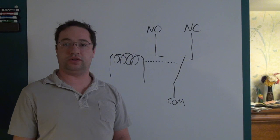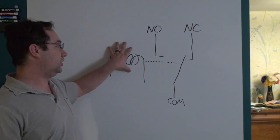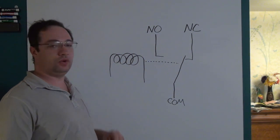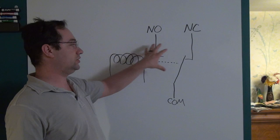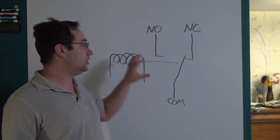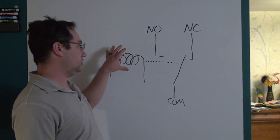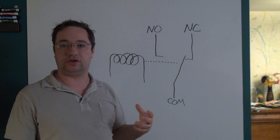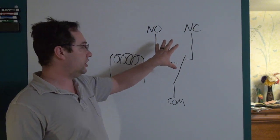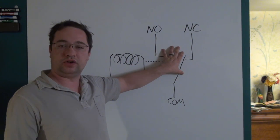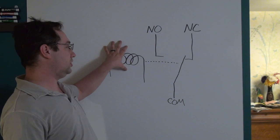When talking about relay ratings, we work from left to right. The left side, with the coil, is called the control side, because it causes things to happen. The right side is called the hot side, because the voltage and current can be tremendously different — you can have hundreds or even thousands of volts on the hot side being controlled with just 12 or 24 volts on the control side.